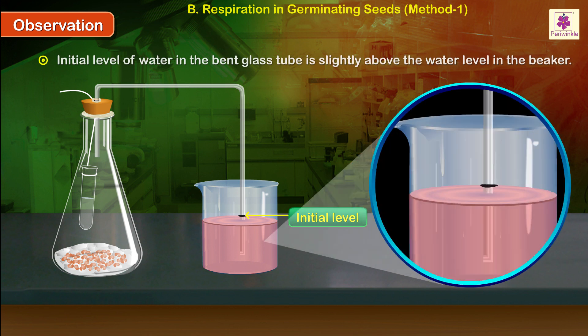Observation: Initial level of water in the bent glass tube is slightly above the water level in the beaker.